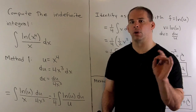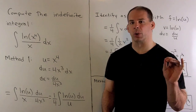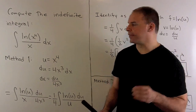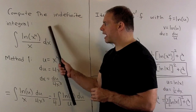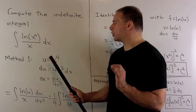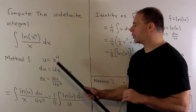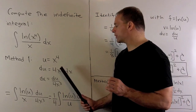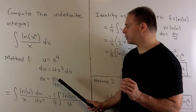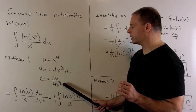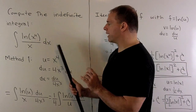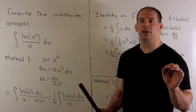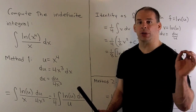We want to be careful when we simplify using the exponent rule for logarithm. First method: I have a composition in the numerator, so I'm going to sub out the inside. I have u equals x to the fourth, then du equals 4x cubed dx, so dx equals du over 4x cubed. We substitute everything in. In the denominator, I have an x and an x cubed — put them together, we can turn that into a u.